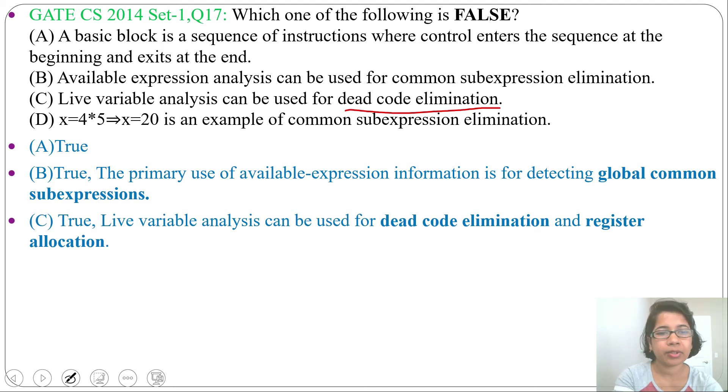Next, option D: x = 4 * 5, then x = 20 is an example of common subexpression elimination. No, this is false. This is not a common subexpression elimination, it is constant folding.